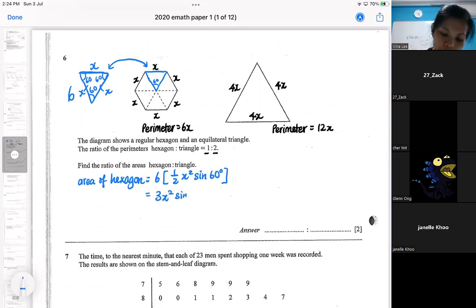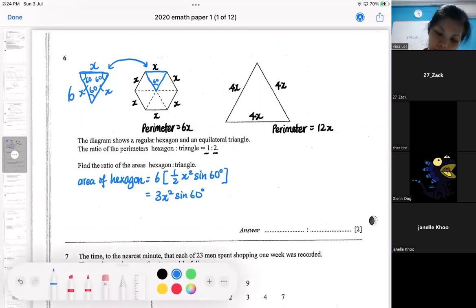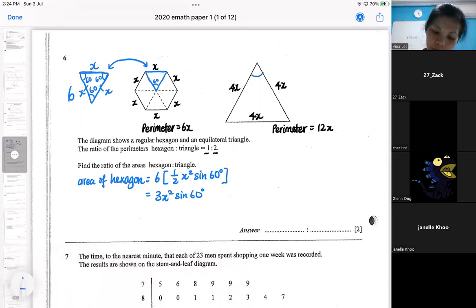You can choose not to punch out sine 60. Okay, this one is also an equilateral triangle, so all these are also 60.